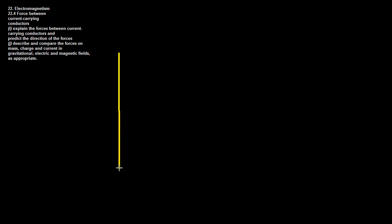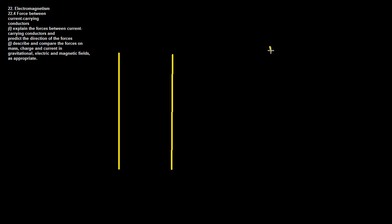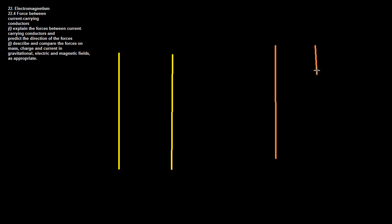There are really only two possibilities when we have two wires. Either the current can be running in the same direction, or it can be running in opposite directions. Logic tells us that these wires both become magnets, and that one case would attract and the other would repel — but how do we know which one does which?